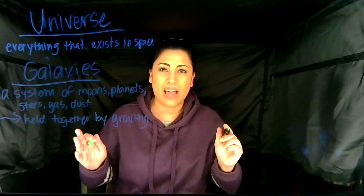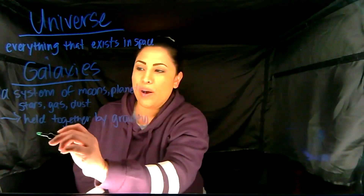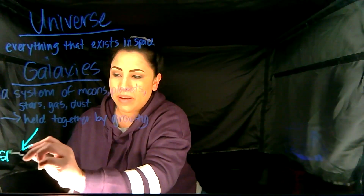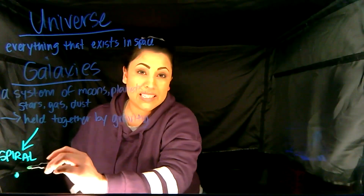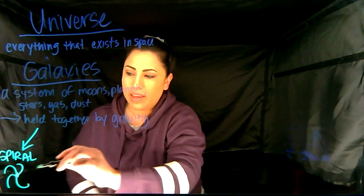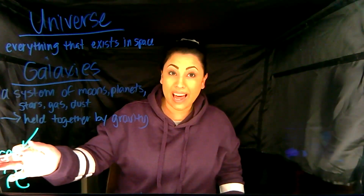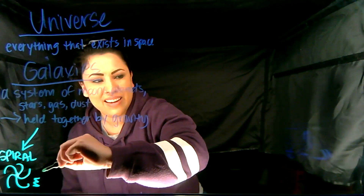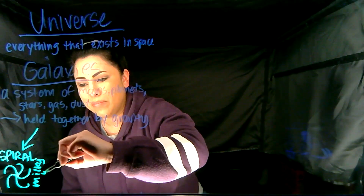Now some of you may already know this, but there are three main types of galaxies. Our first galaxy type is going to be a spiral. Just like it sounds, we draw a dot and a spiral moving around like this. Our galaxy is actually a spiral — we call it the Milky Way.